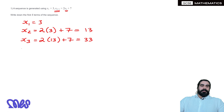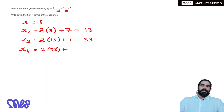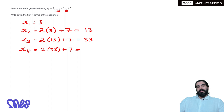Then the fourth term is 2 times the previous term, add 7. 2 times 33 is 66, and then 66 plus 7 is 73.